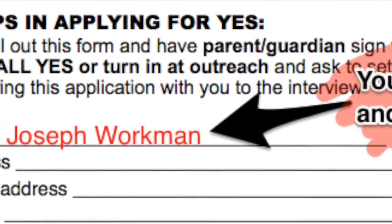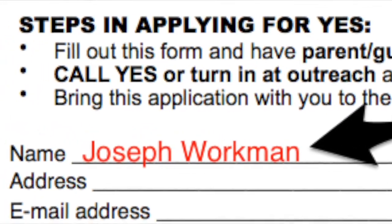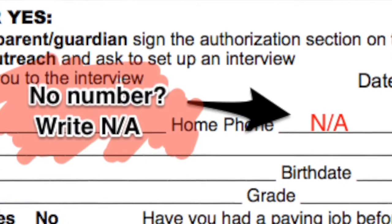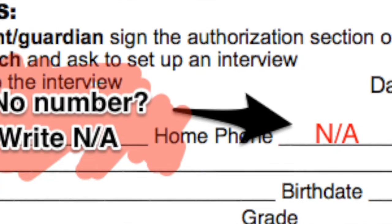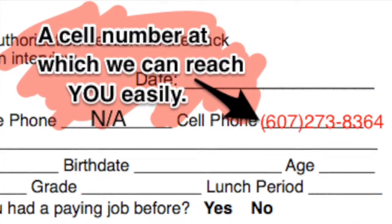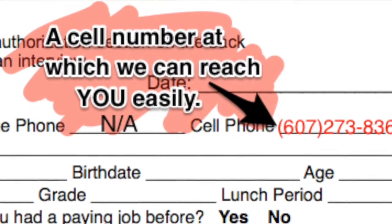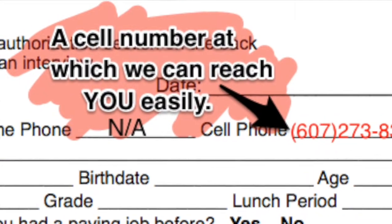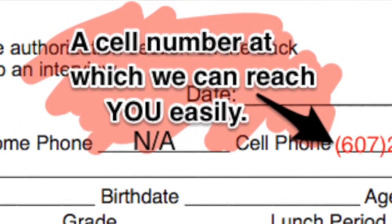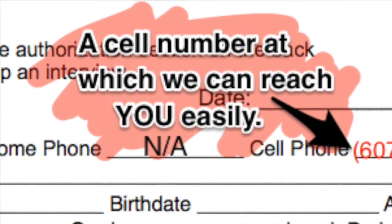We want to know your full first name and your full last name. For your home phone number, if you don't have a phone at home that you can easily be reached at, you can just write N/A, which means not applicable. For the cell phone, if you don't have a cell phone but your parent or guardian has one, just make a note that it's your parent or guardian's number.